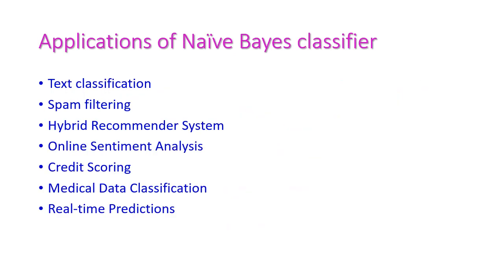So far we have seen some of the applications of Naive Bayes classifier: text classification, spam filtering, hybrid recommender system, online sentiment analysis, credit scoring, medical data classification, and real-time predictions. In the next class, we will see another important topic from the third unit. Thank you.